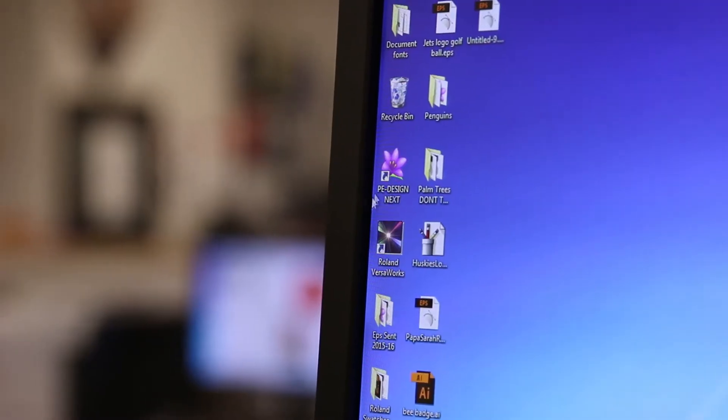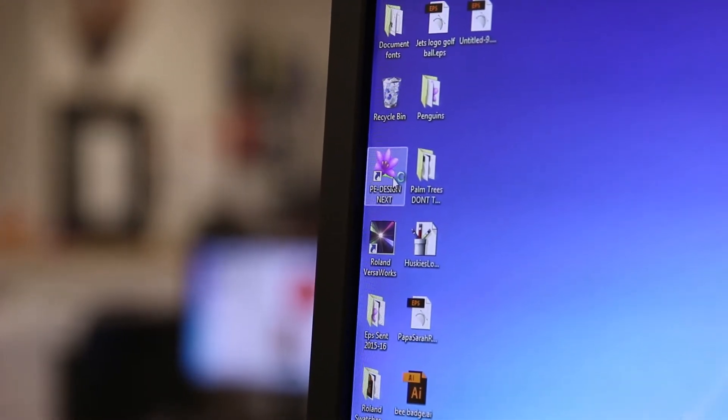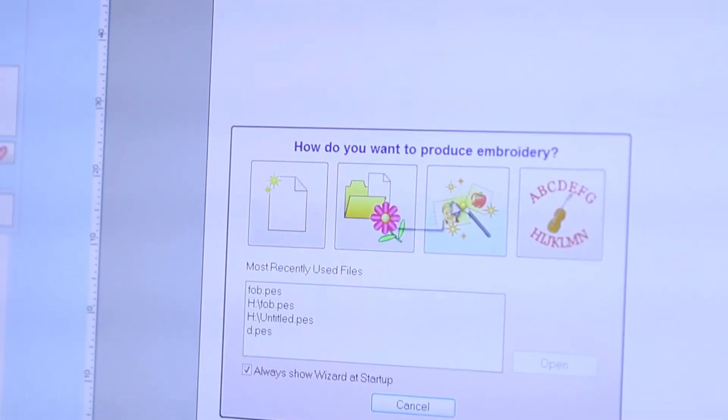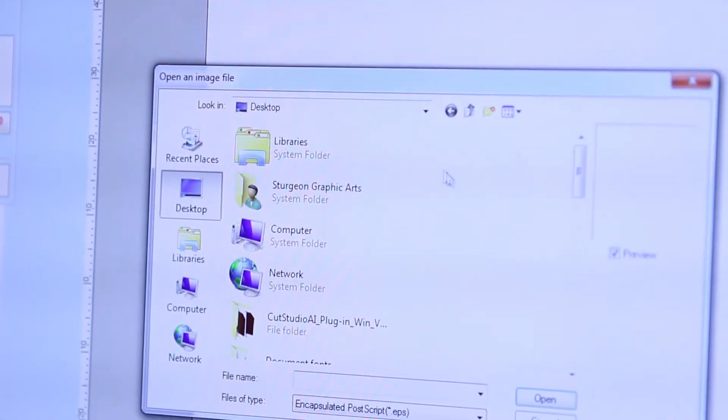Now open up Sewing Next, a program by Brother. Inside the program, select Image to Stitch and find the EPS file.